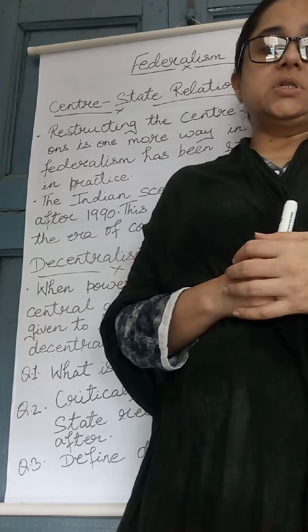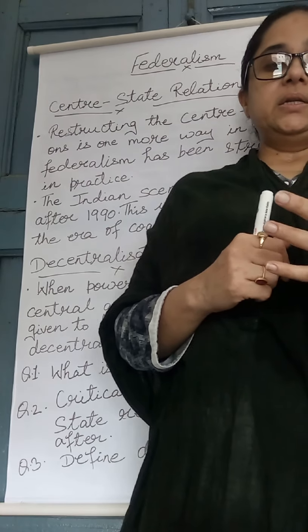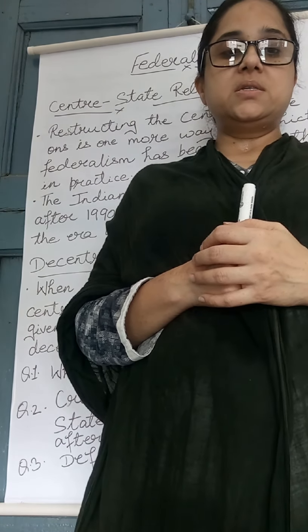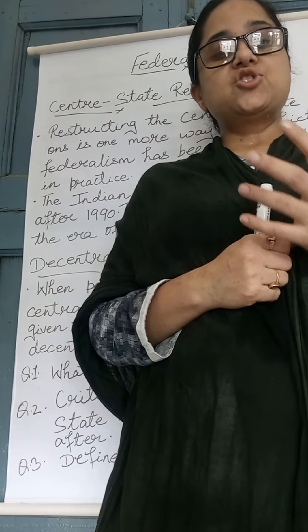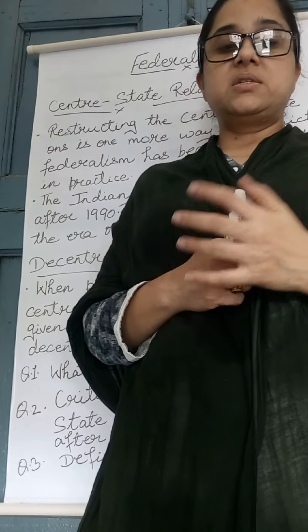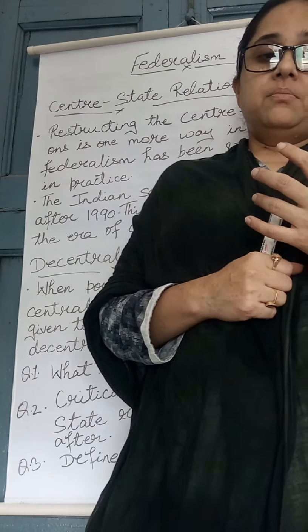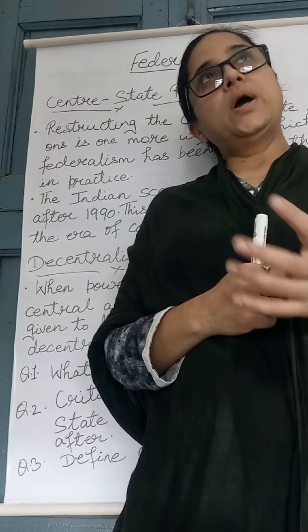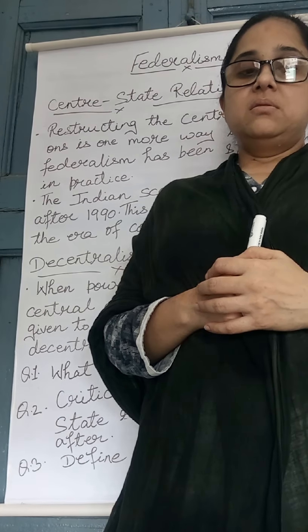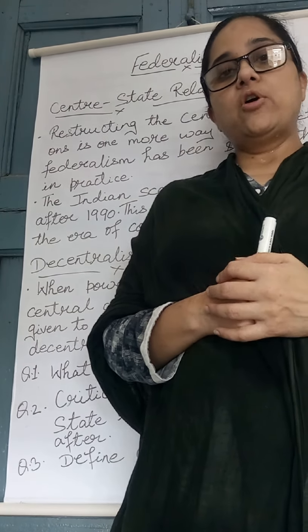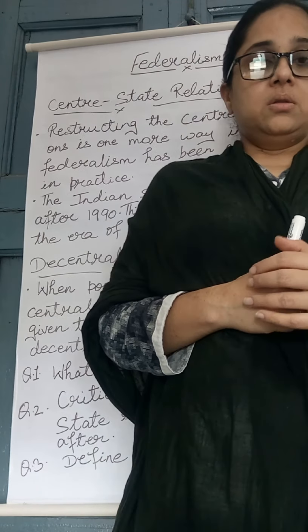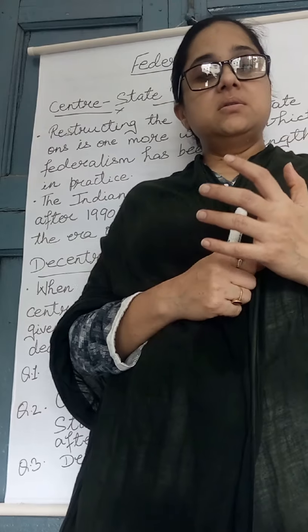State governments ruled by rival parties were dismissed, which undermined the spirit of federalism. Then afterwards, in 1990, some changes took place — regional parties were formed and they said goodbye to one-party government. That was also the time of coalition governments at the center and states.